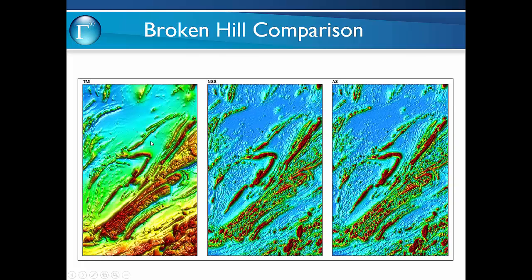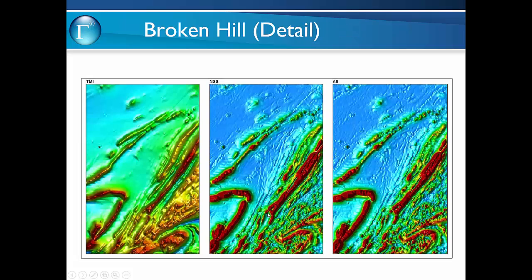Here's an example from Broken Hill where we've got quite contrasting areas of geology. Generally speaking, the continuity of the finer features is improved in the normalised source strength. Getting into more detail, you start to see this continuity in the finer features along the edges of the detail. Geological continuity will probably be the strongest benefit from using normalised source strength compared with the analytic signal.